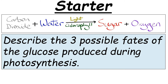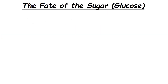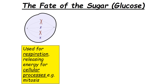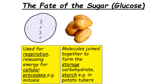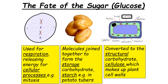Once the plant produces glucose, there are three things it can do with it. First, use it immediately for respiration, releasing energy/ATP for processes like mitosis — plants carry out both photosynthesis and respiration. Second, store it by converting glucose into starch. Third, convert it into the structural carbohydrate cellulose, which makes up plant cell walls.